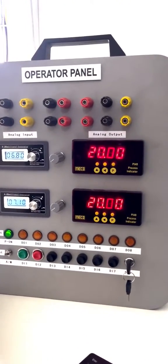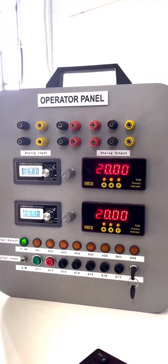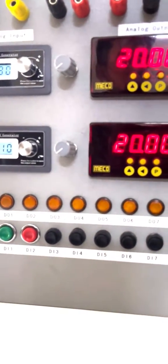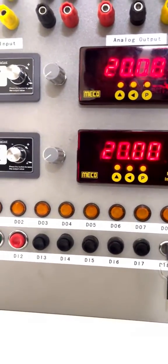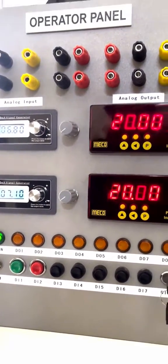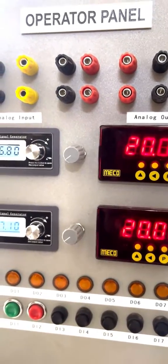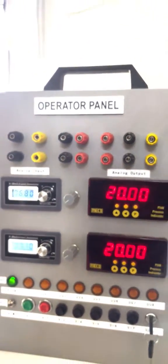In addition to that, we have connected the IOs to a real-time operator panel where you will be able to have hands-on experience with the IOs. Here we have connected the digital inputs to the push buttons and toggle switches, and we have connected the digital outputs to the lamps in the operator panel. We also have a 4 to 20 milliamp signal generator for analog input configuration and a display to show the analog values.